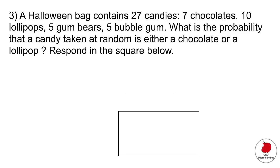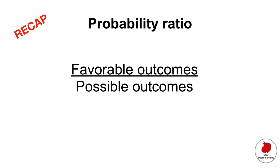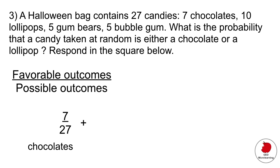All right the next question is a fill-in-the-blank question looking at probability. Okay so there is a part of the test that looks at statistics probability. So it says a Halloween bag contains 27 candies, 7 are chocolates, 10 lollipops, 5 gummy bears, 5 bubble gum. What is the probability that a candy taken at random is either a chocolate or a lollipop? Okay so let's quickly remind ourselves of this probability ratio. So whenever they ask you to find out a probability you want to remember this equation which says that the favorable outcomes or what you want to happen divided by all possible outcomes.